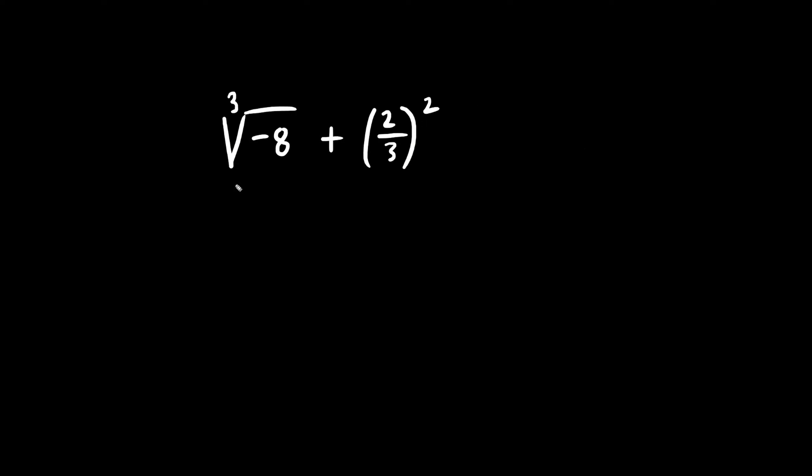Let's try a cube root problem. What times what times what becomes negative eight? The answer is negative two. Negative two times negative two times negative two indeed is the inside. And so this here is the cube root of negative eight. And we're adding a fraction squared. We're going to square the top and the bottom. Two squared is four. And three times three is nine.